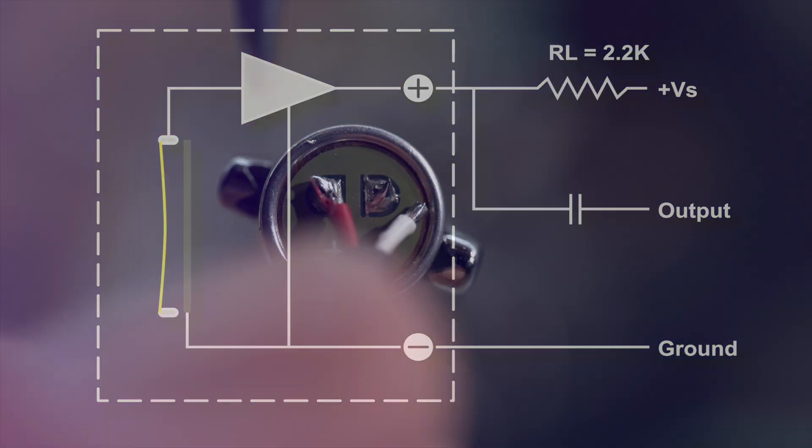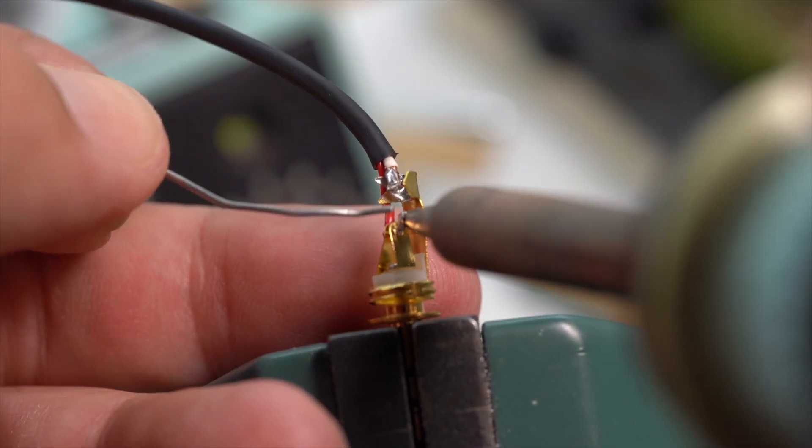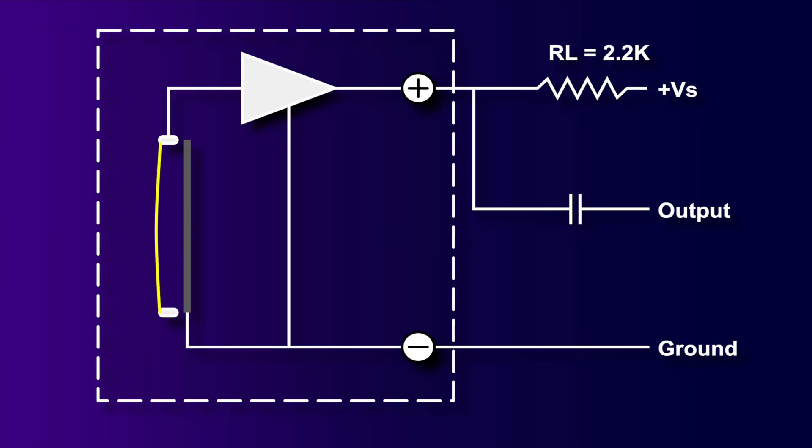In fact, so simple, all we need to do is solder the capsule to some wire and then the wire to an eighth-inch jack. The rest of the circuit is already inside the recorder.